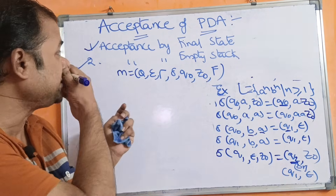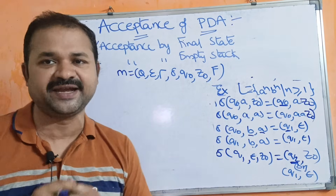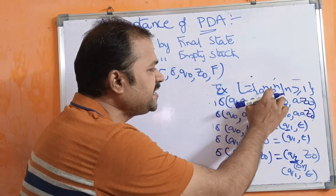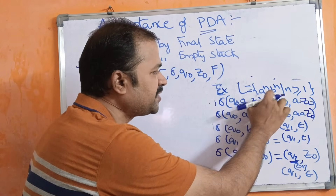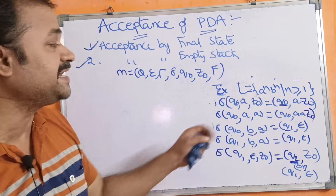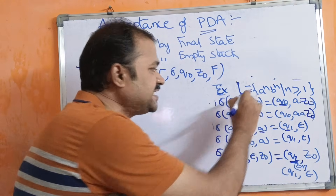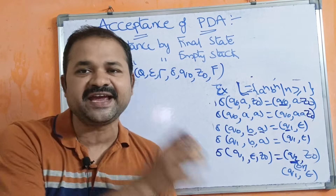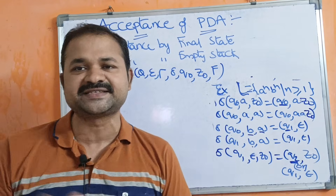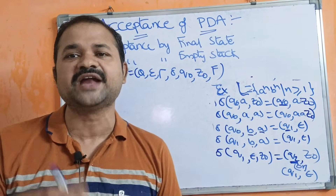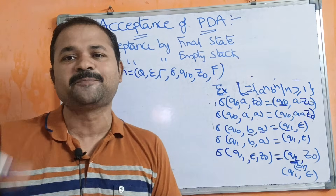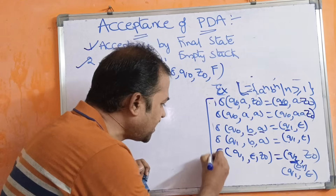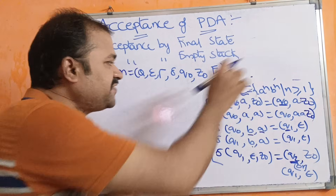Now let us discuss about acceptance of PDA by taking this example: L = {aⁿbⁿ | n ≥ 1}. We have seen this example before; a link will be shared in the description. If you are unfamiliar with this example, please go through that link. These transition functions are needed for this example.